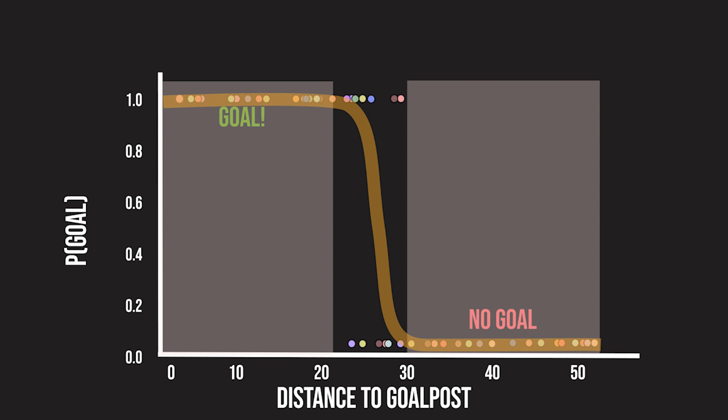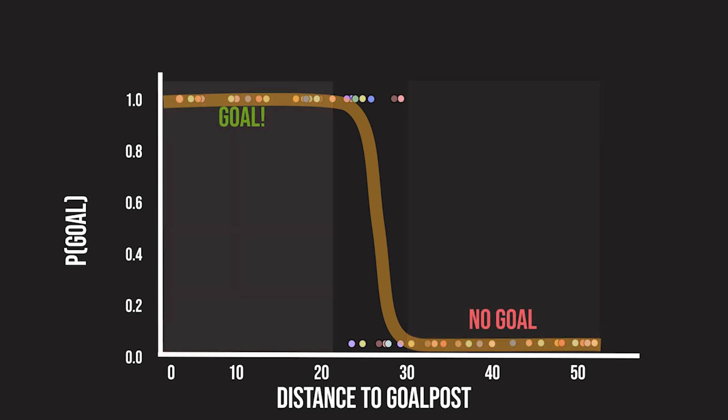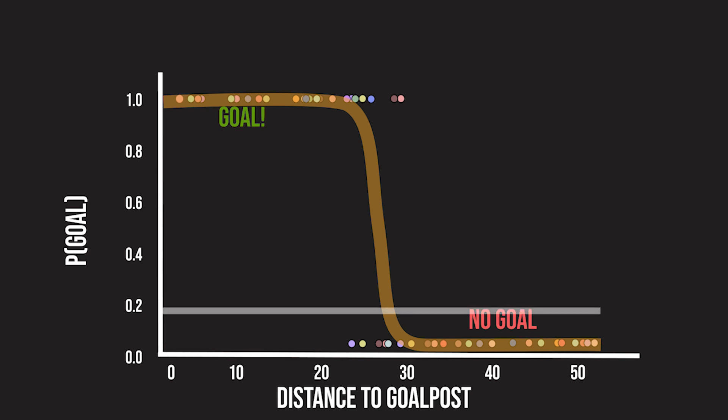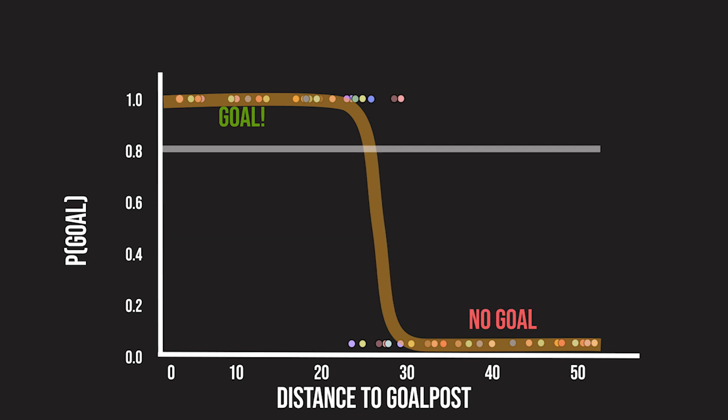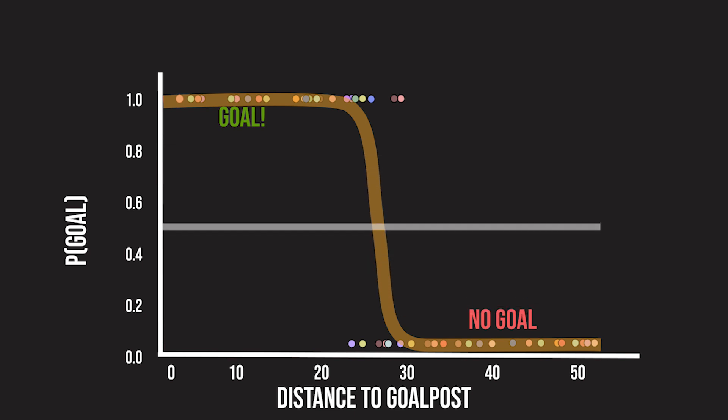While shots greater than 30 meters are all misses, so the prediction is 0. Between 20 and 30 meters, the model behaves linearly and this is the decision boundary. Here the predictions are between 0 and 1, and we can pick a threshold probability above which a shot will be classified as a goal.